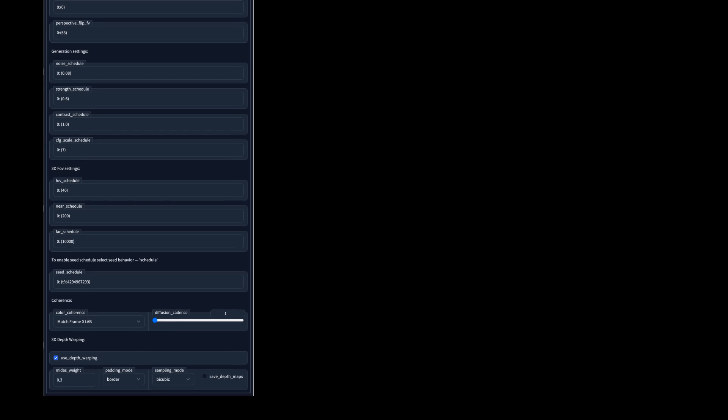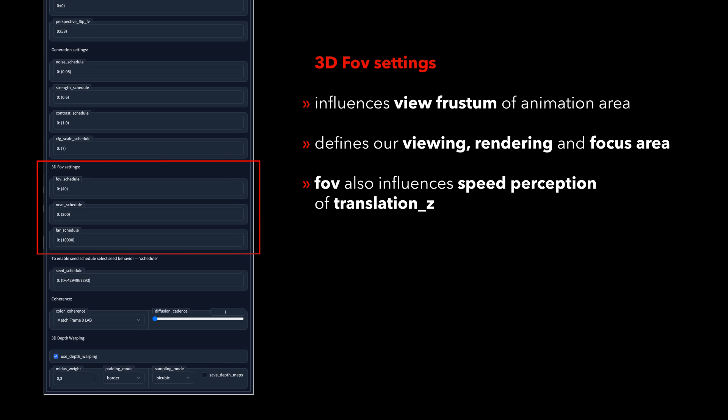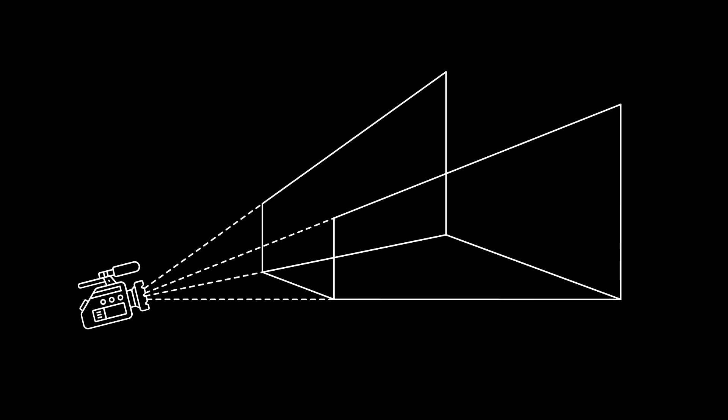A bit further down, we will find three more input fields we can work with in 3D mode. These settings will influence something that's called the view frustum of a camera, which can be described as a pyramid lying on its side with the tip clipped off. The near plane is the top field of this pyramid, and the far plane is the bottom of it.